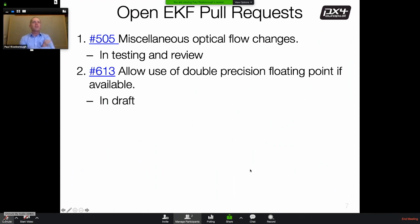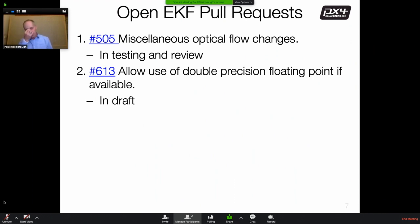There are two outstanding pull requests. One involves miscellaneous optical flow changes currently in test and review. The other relates to F7 and H7-based flight boards, where the ability to use double precision in the estimator calculations is now available. This will enable more aggressive tuning of the estimator, particularly the process noise, without worrying about loss of stability in the covariance calculation due to numerical rounding errors. This is currently in draft and requires further evaluation of its effect on tuning parameters.